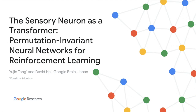Hi, I'm Yujin Tang, a research software engineer at Google Brain Tokyo team. In this presentation, I'll talk about our recent work, The Sensory Neuron as a Transformer: Permutation Invariant Neural Networks for Reinforcement Learning. This is a joint work with my colleague David Ha.